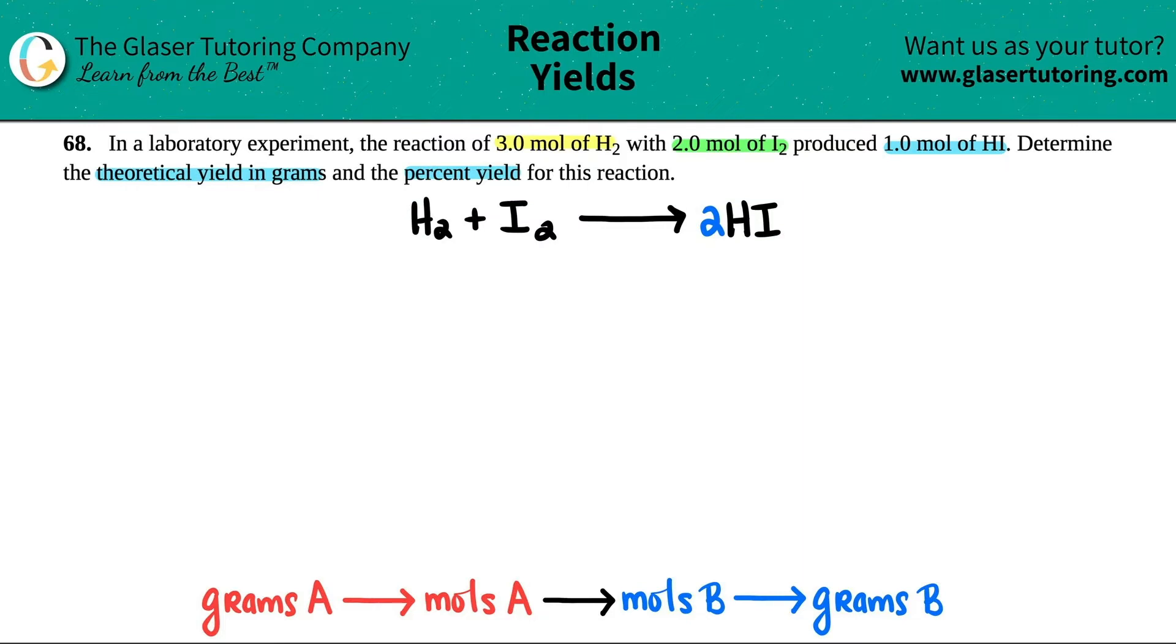The next thing is I like to write down what they told me. They told me that the reaction was between 3.0 moles of H2 and 2.0 moles of I2. And it actually produced 1 mole of HI. Now they want to know what the percent yield is. So let's give the formula right now.